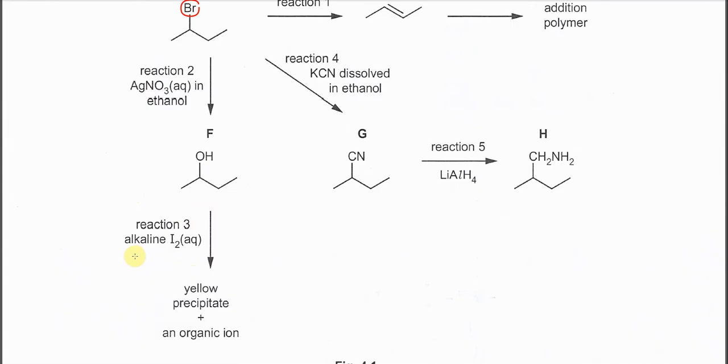So reaction 3 is alkaline iodine. Alkaline iodine is a mild oxidizing agent. It will oxidize this alcohol to the ketone. This one is removed and one of the H here will be removed to form this methyl ketone.